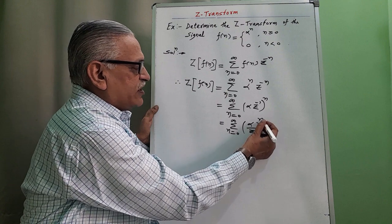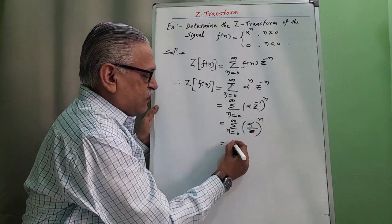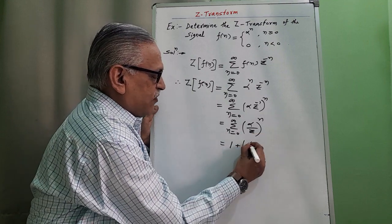Substituting the values, for n equals 0, we get any number raised to 0, we have 1. Next, for n equals 1, we have alpha by Z.